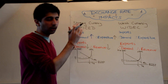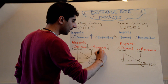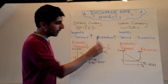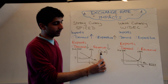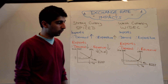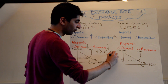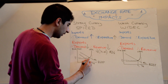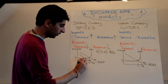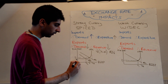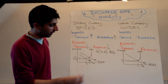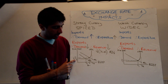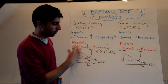We know imports and exports feature in the aggregate demand equation as X minus M — export revenue minus import expenditure. So if our import expenditure is going up and our export revenue is going down, overall the value of this bracket is going to fall, which means aggregate demand is going to fall. So on a diagram, when there is a strong exchange rate, aggregate demand is going to decrease from AD1 to AD2, shifting to the left, which causes a reduction in growth and a reduction in demand-pull inflationary pressure. As growth decreases from Y1 to Y2, there is going to be an increase in unemployment.